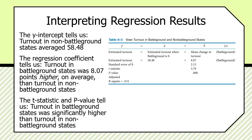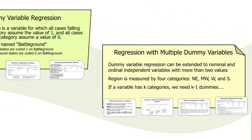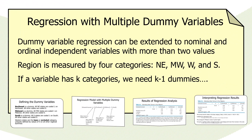The dummy logic can be easily extended to variables that have more than two categories. Dummy variable regression can be extended to nominal or ordinal independent variables with more than two values. For example, let's take a variable from the states data set called region, which has four categories: northeast, midwest, west, and south. This nominal variable has four values — how do we translate it into a dummy variable regression?